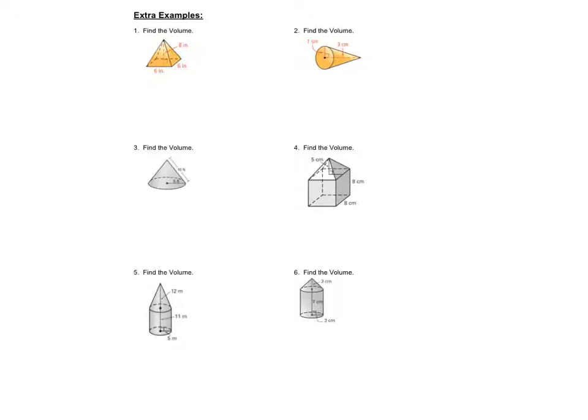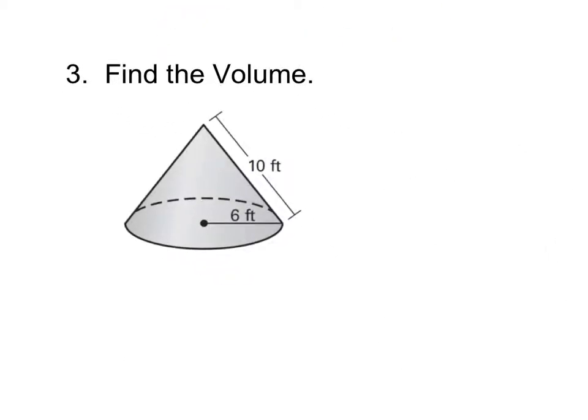All right. A couple of problems that I want to work here. First off, let's take a look at this one. There's a problem with this one. What's the problem? They give us the slant height. They don't give us the height of the cone. And so when I come in here and use my volume formula, one-third base times height, so I get one-third pi r squared times height, I don't know the height. So I have to find the height. Okay?